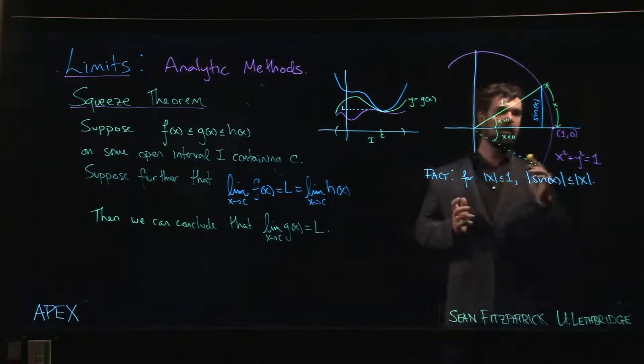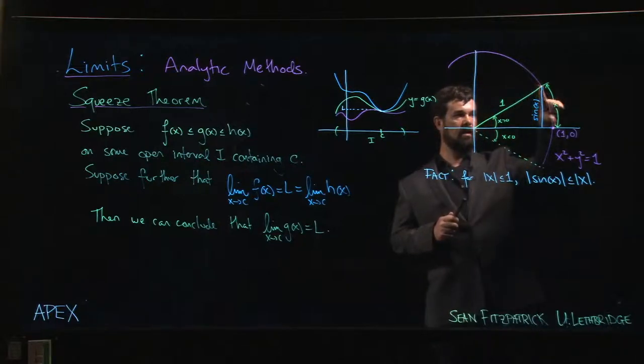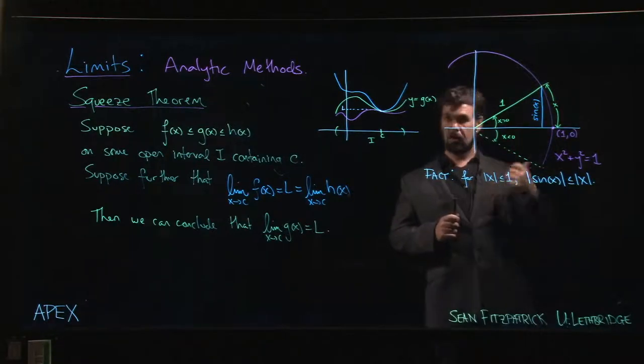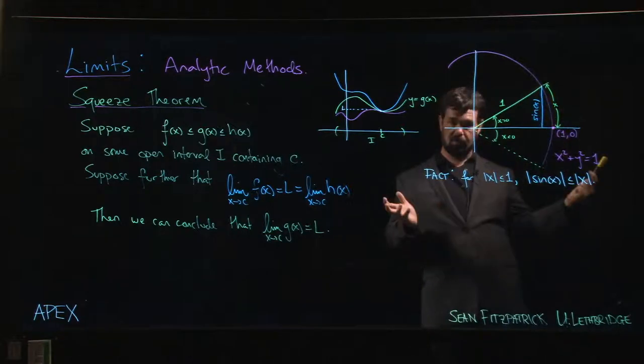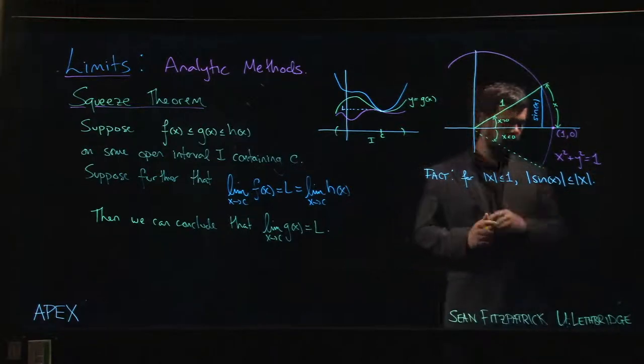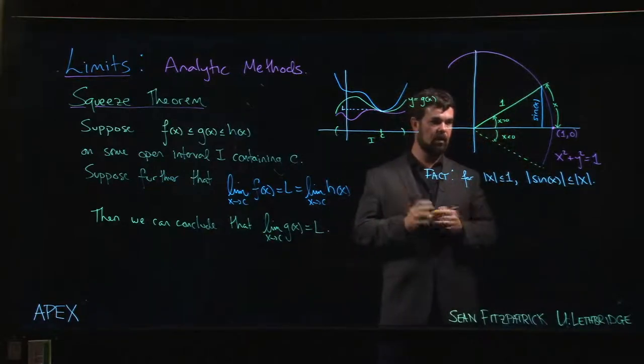So it's clear from the picture that this length is less than that length because this is a straight line path going straight down from that point to the x-axis. And this is a curved path that's taking a longer route. So sine x is less than or equal to x when we're in the first quadrant.